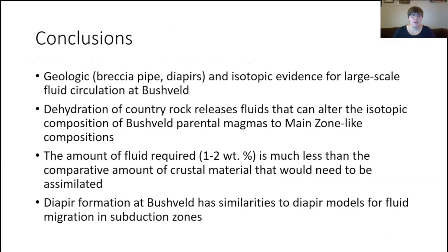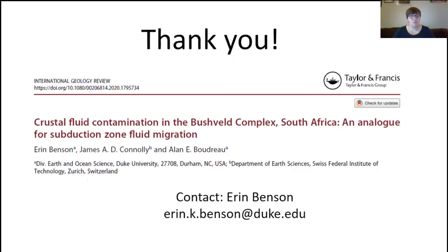In conclusion, there is geologic and isotopic evidence for large-scale fluid circulation at Bushveld. The dehydration of country rock releases fluids that can alter the isotopic compositions of Bushveld magmas to more main zone-like compositions with much less required fluid compared to the crustal material that would need to be assimilated to achieve similar isotopic signatures. As a broader connection, diapyr formation at Bushveld has similarities to diapyr models for fluid migration in subduction zones, which may help us better understand the physical processes causing melting above subduction zones. For more information, check out our paper on the isotopic modeling and subduction zone connections, or feel free to email me with any questions.